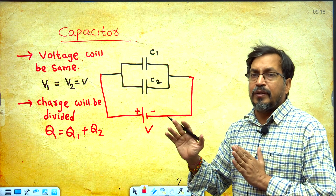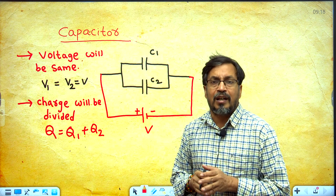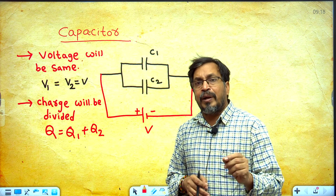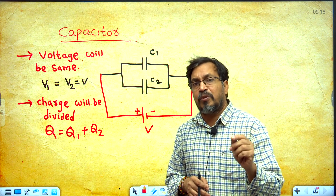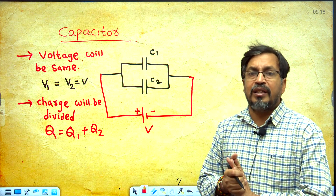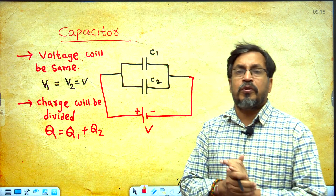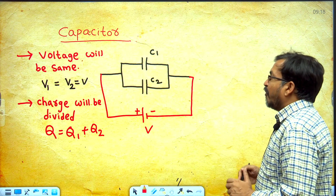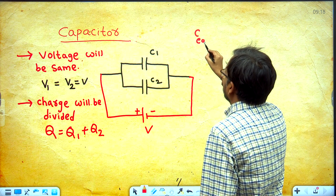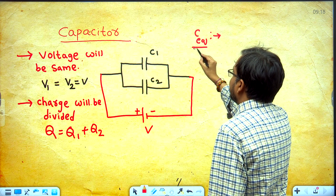These two concepts for series combination and two concepts for parallel combination must be remembered clearly. Same as when we discussed resistors in series and parallel. Now I am finding the equivalent capacitance C equivalent.